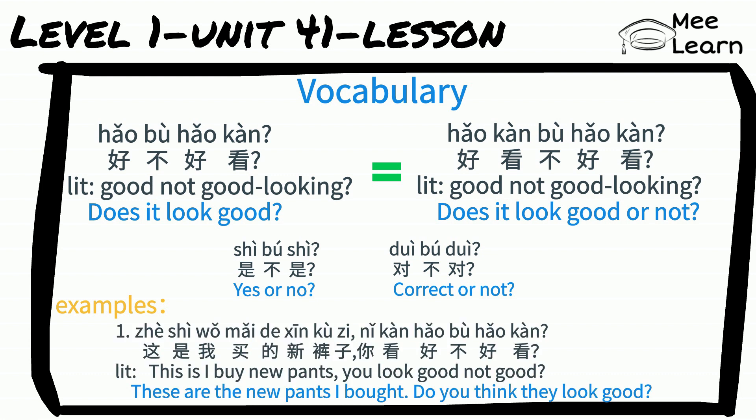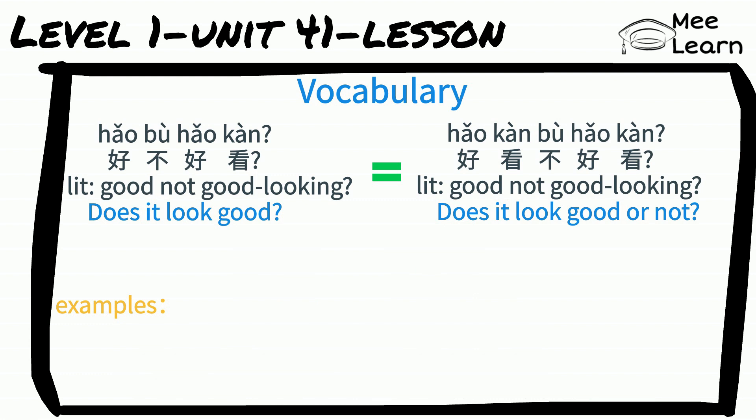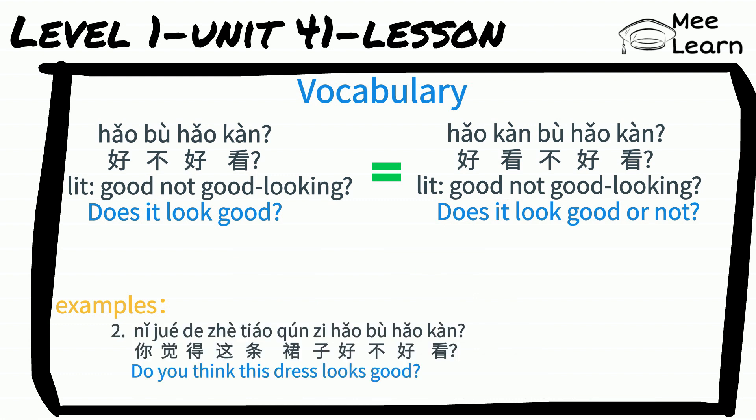这是我买的新裤子。你看好不好看。Literally: 'This is I buy new pants. You look good or not good.' — 'These are the new pants I bought. Do you think they look good?' Another example: 你觉得这条裤子好不好看？ Do you think this dress looks good?